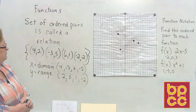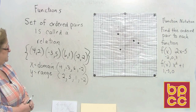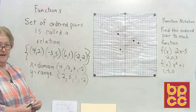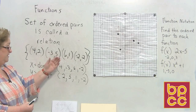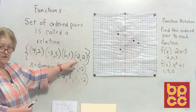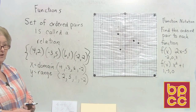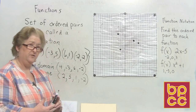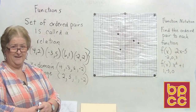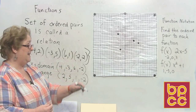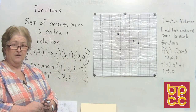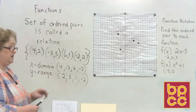Now, a function — in order to determine if you have a function, the value of X in the ordered pair has to be different for each of the ordered pairs in the group. I can tell by looking that this is a function because all the X's are different. And when I plot them, we use what we call a vertical line test. If I were to draw vertical lines down my graph, and I only hit one point on the way down, then that represents a function. So my set here does represent a function.